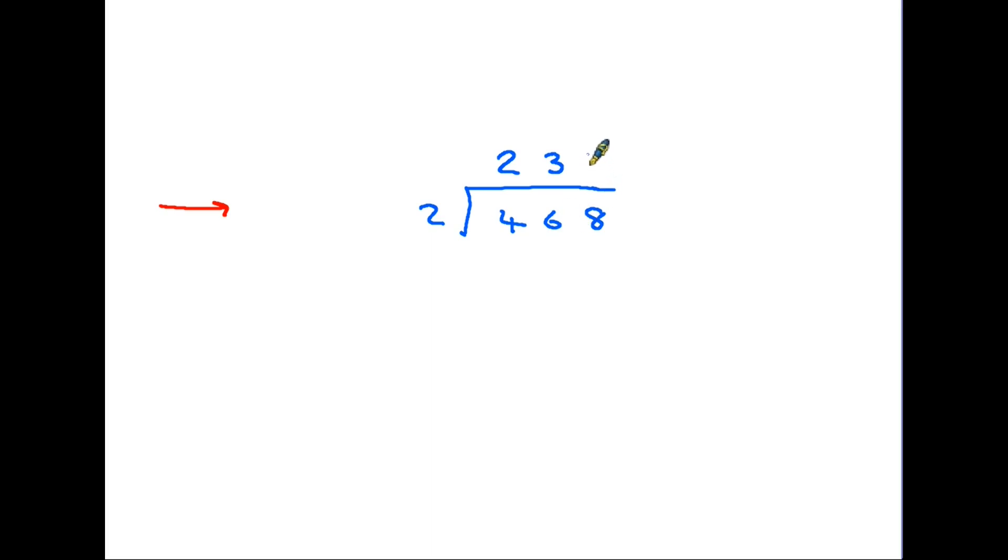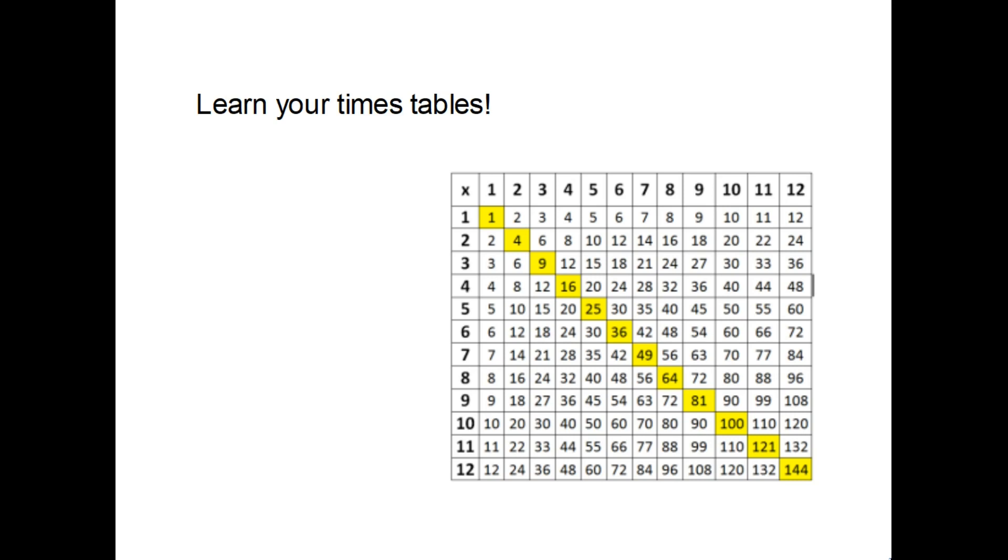Well, there are 3 twos in 6, and how many twos in 8? There are 4 twos in 8. Now have you noticed that one of the things I'm doing here is that although this is a division sum, I am using my knowledge of multiplication in order to work out the answers.